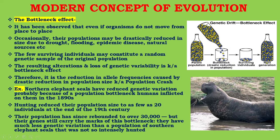The resulting alteration and loss of genetic variability is known as the bottleneck effect — the reduction in allele frequencies caused by a drastic reduction in population size, such a phenomenon being known as a population crash. For example, northern elephant seals have reduced genetic variation probably because of a population bottleneck inflicted on them in the 1890s, when hunting reduced their population to as few as 20 individuals. Their population has since rebounded to over 30,000, but their genes still carry the marks of this bottleneck, showing much less genetic variation than the southern elephant seal population that was not so heavily hunted.